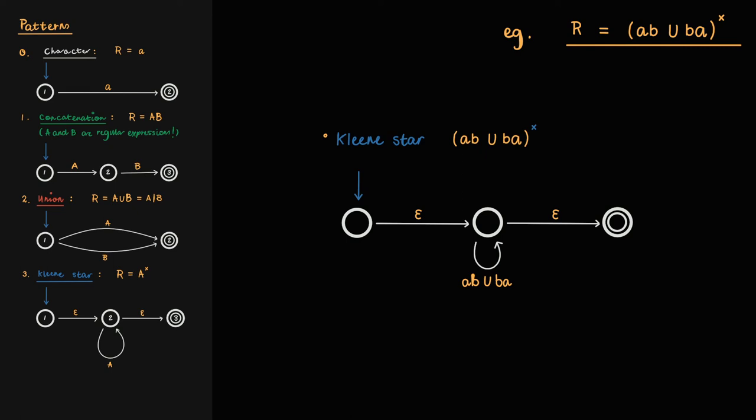The expression on the loop transition is a union operation of two expressions, ab and ba. So we can replace the loop transition, which is a transition from a state to itself, with the union pattern.